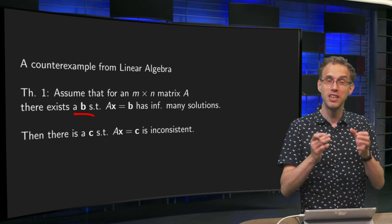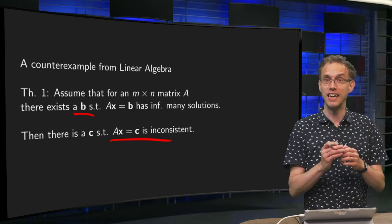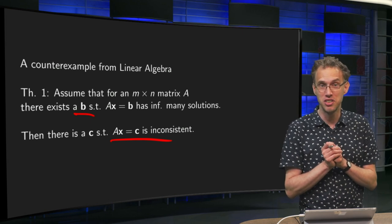Well, then the theorem was, if that is the case, then there also exists a C such that Ax = C is inconsistent.